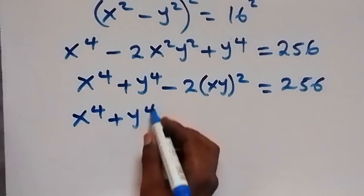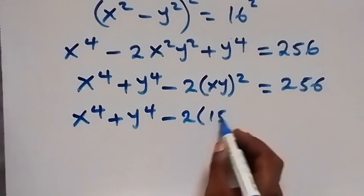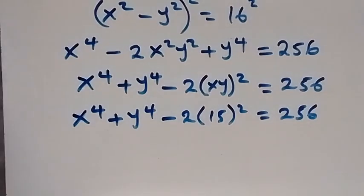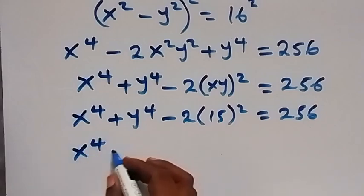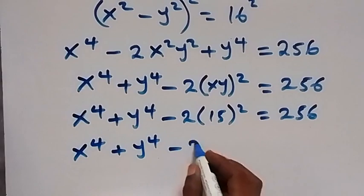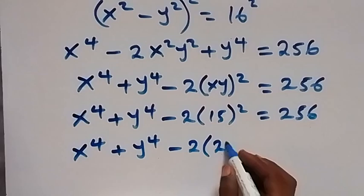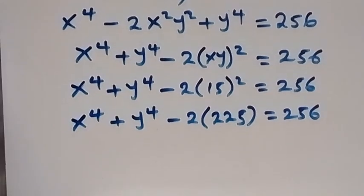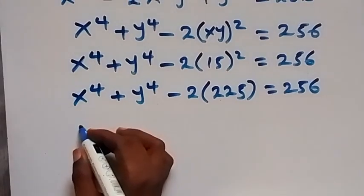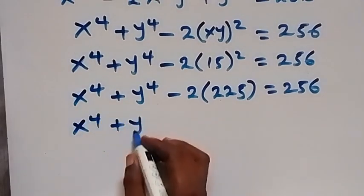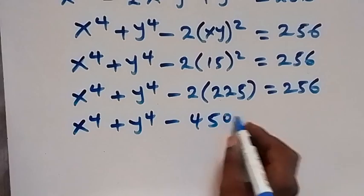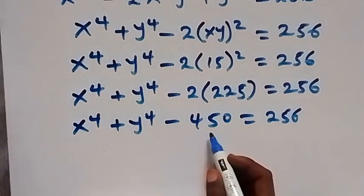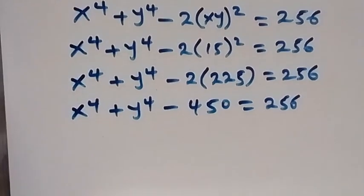We have x to the power of 4 plus y to the power of 4 minus 2 multiplied by 15 squared equals 256. Simplifying, 15 squared is 225, and 2 times 225 gives us 450. So we have x to the power of 4 plus y to the power of 4 minus 450 equals 256.